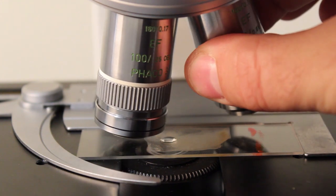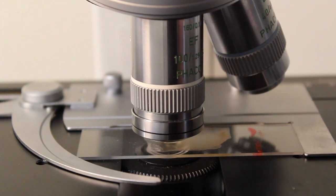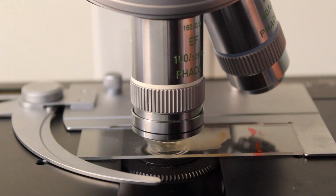So the next step is to rotate that oil lens into place slowly. It should be in focus, or very close to in focus, because it should be par focal with your other lenses. And so you can now fine tune your focus using the focus knobs.